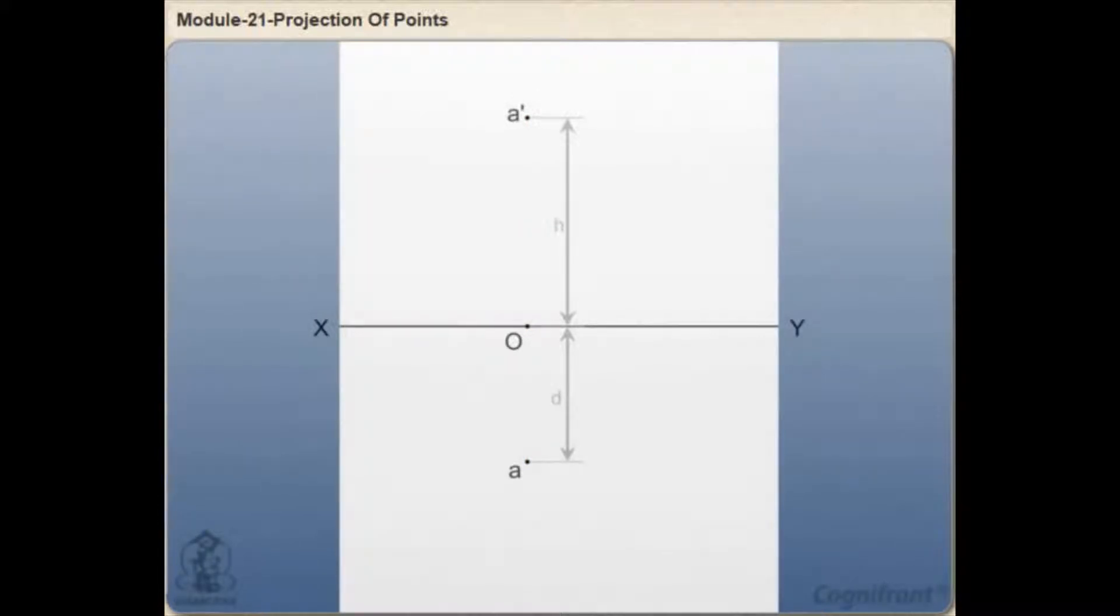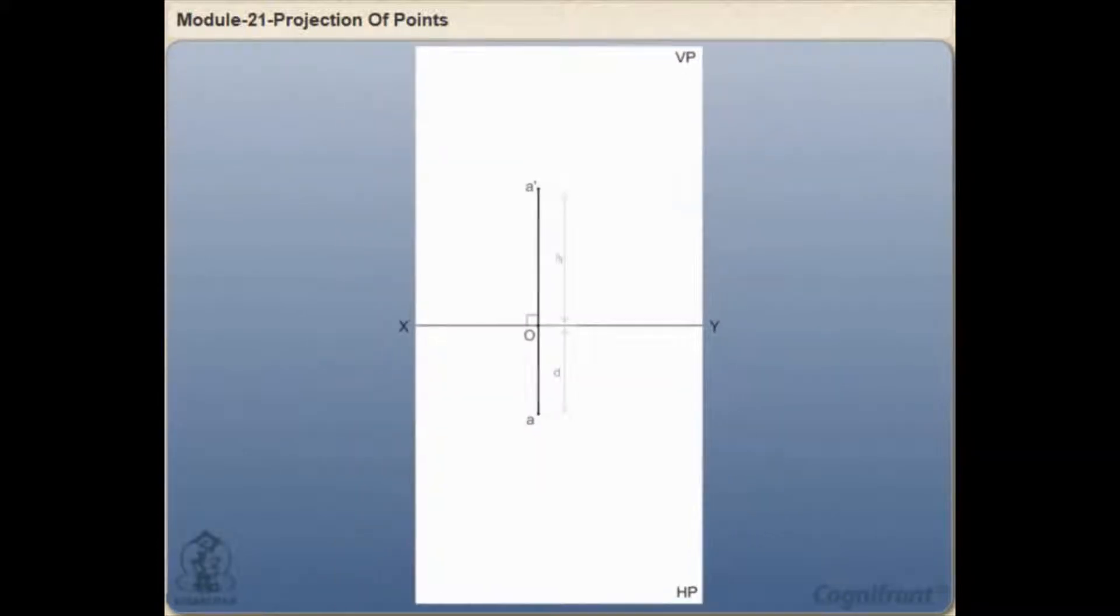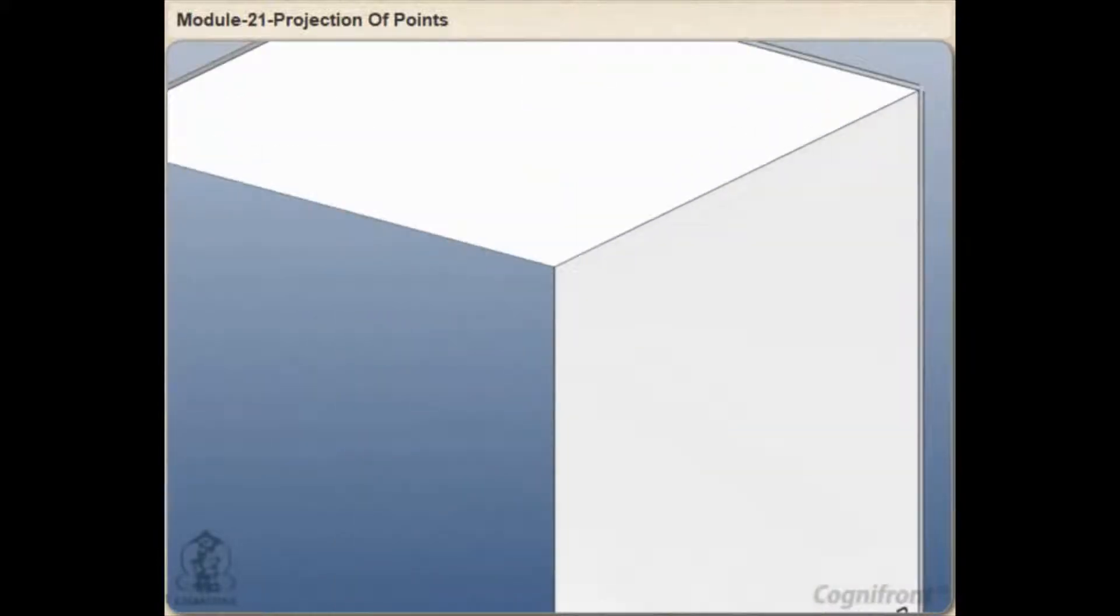Here A and A dash represent the images of the object on VP and HP respectively. The line joining A and A dash is the projector line and is perpendicular to the reference line XY. Now let's see what will be the projection of a point in the third quadrant.